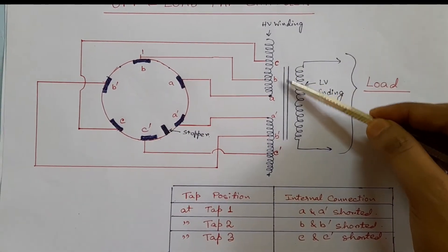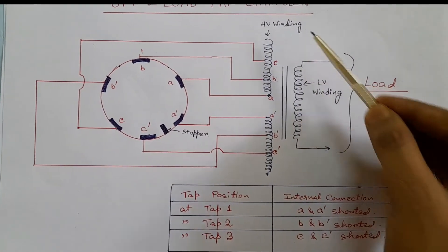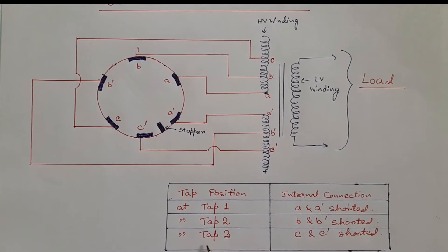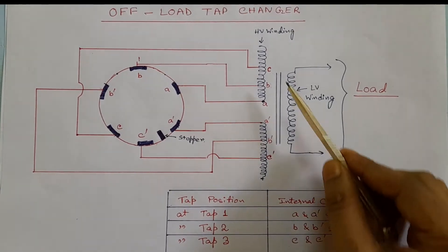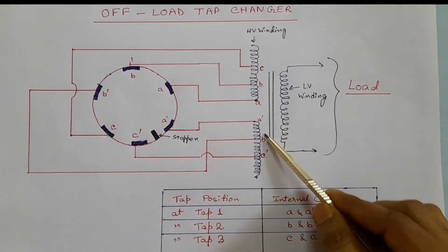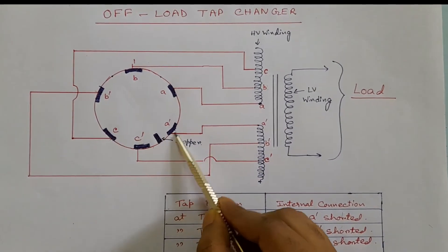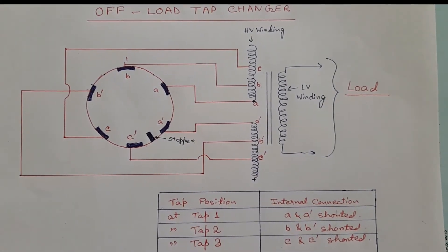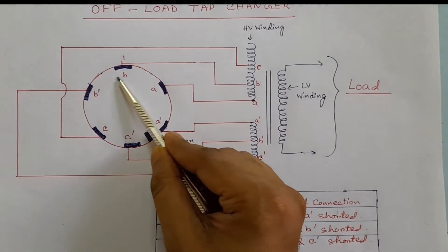Notice that there are six taps in the high voltage winding, but we have only three selectable tap positions in this off-load tap changer. Also notice that these six taps are connected with six studs in the off-load tap changer, and these studs are not connected with each other.